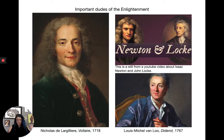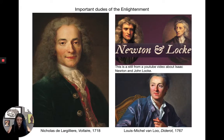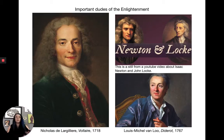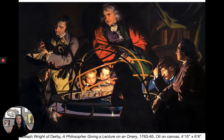During the Enlightenment there's investment in education, scientific discovery, and technological invention. This leads to the Industrial Revolution. The shift in focus to observing the natural world also sparks an interest in Natural Art. These two things are quite influential in the art of the 18th century outside of the Rococo.